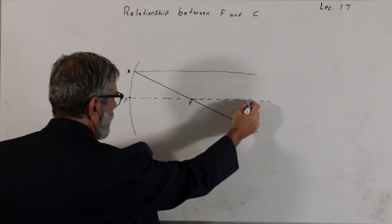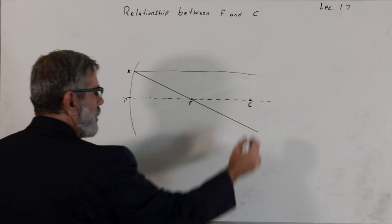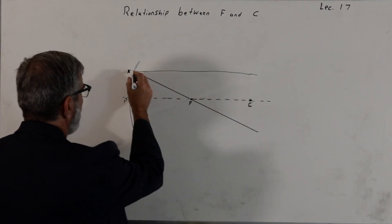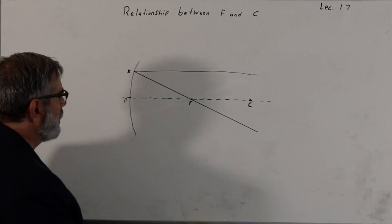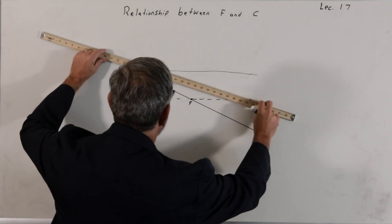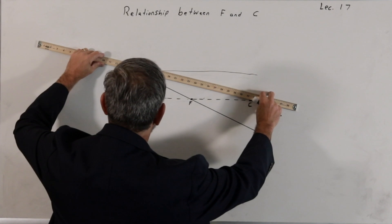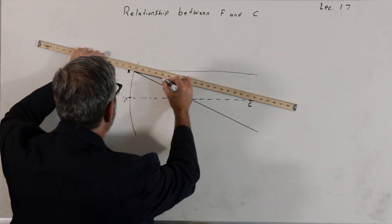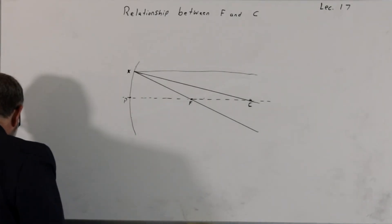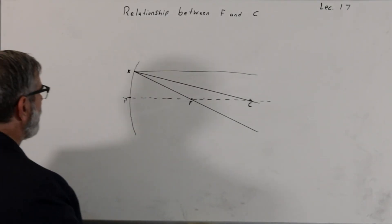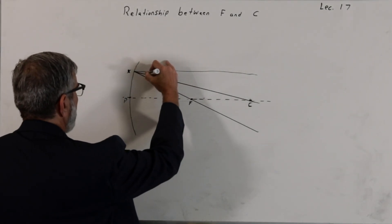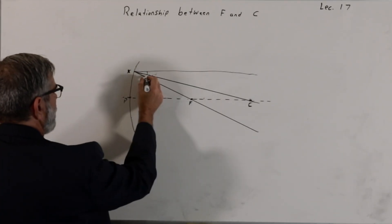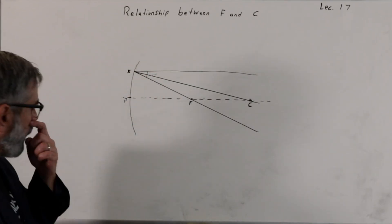Next, I want to consider a radial line from the radius of curvature point c to the point x. By definition, this will be normal to the surface of the circle, or the reflector. And as such, by the law of reflection, it's going to bisect the angle — this would be the angle of incidence — and these angles are equal by the law of reflection.